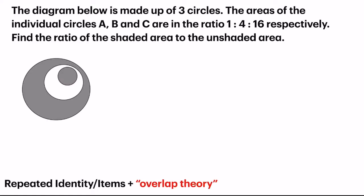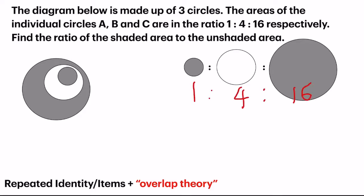Sometimes ratio questions can be combined with other topics. For example, the diagram below is made up of 3 circles. The areas of the individual circles A, B, and C are in the ratio of 1 to 4 to 16. Now they want us to find the ratio of the shaded area to the unshaded area. Now the repeated identity in this case is hidden, or rather, it's what I call overlap theory.